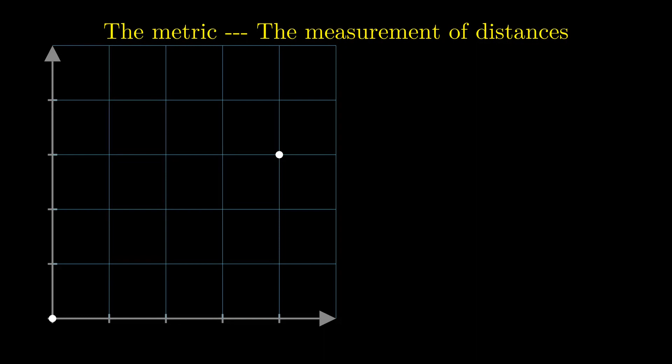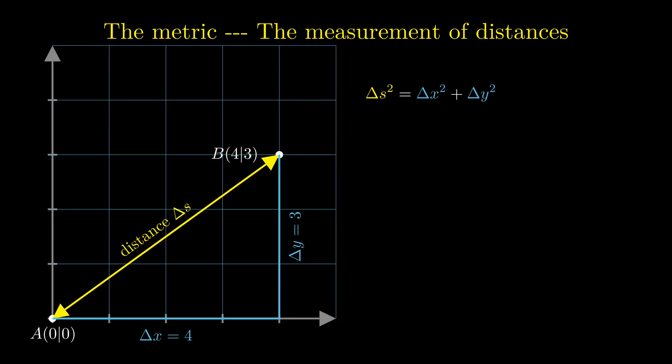All you really need is Pythagoras's theorem applied to distance measurements. In two dimensions, the square of the distance between two points is related to the difference of the x-coordinates delta x and the difference of the y-coordinates delta y because of the right triangle. This simple theorem can be rewritten as a matrix product. The coordinate differences are combined to row and column vectors and a two-by-two matrix is called the metric of this geometry. It doesn't look so simple in general.